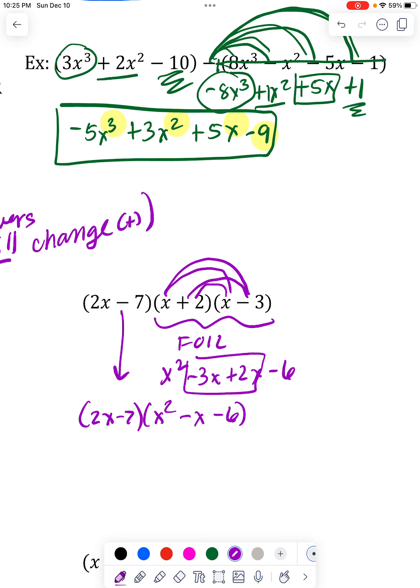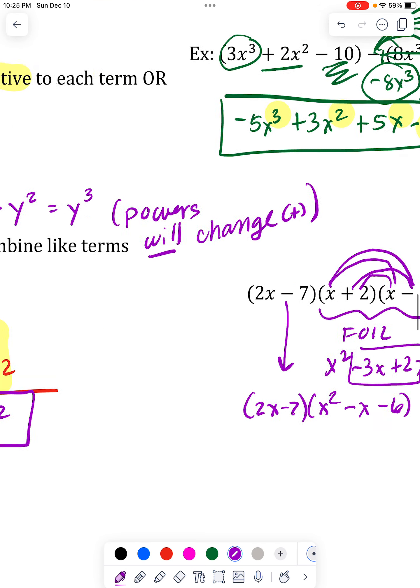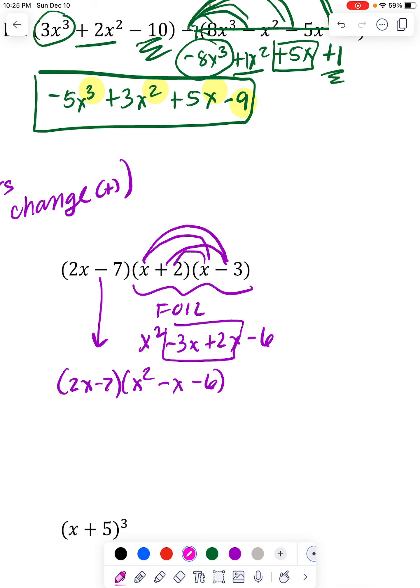And then at that point, I still need to multiply that answer by this 2x minus 7. So now it kind of becomes the same process as we did in the previous problem. So I'm going to multiply my 2x times every term. And that's going to get me a 2x³.